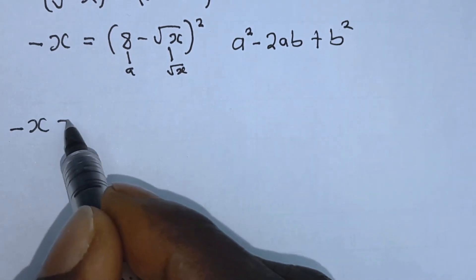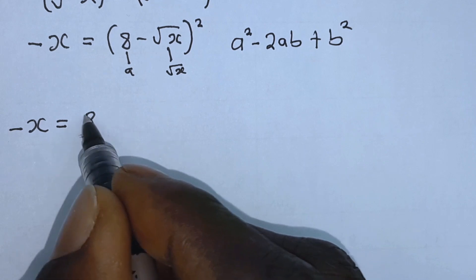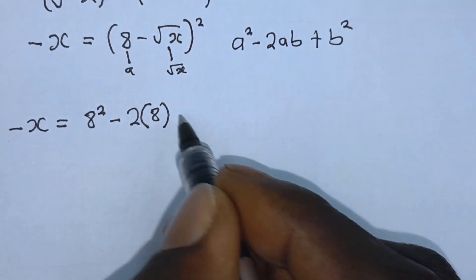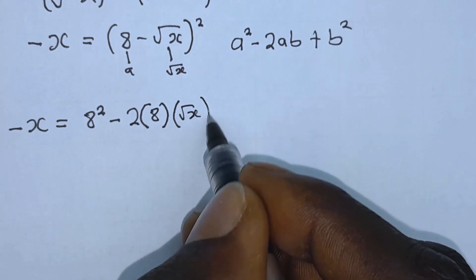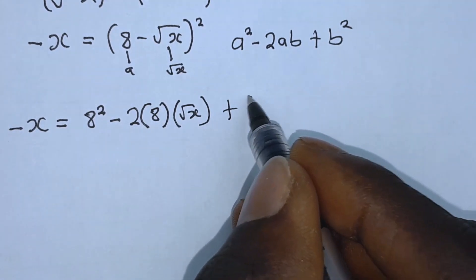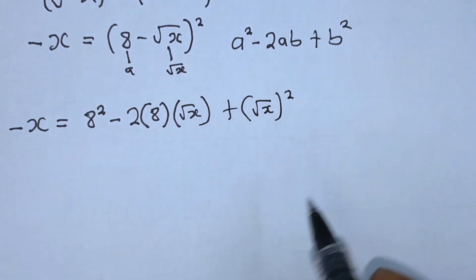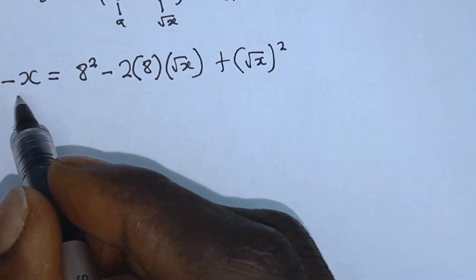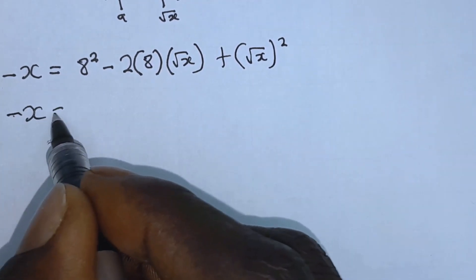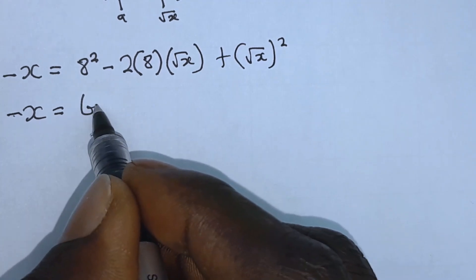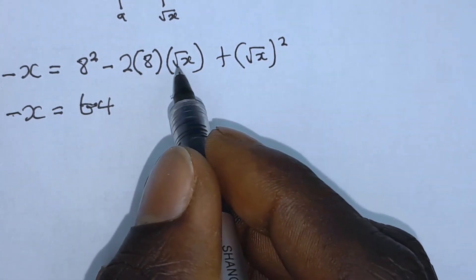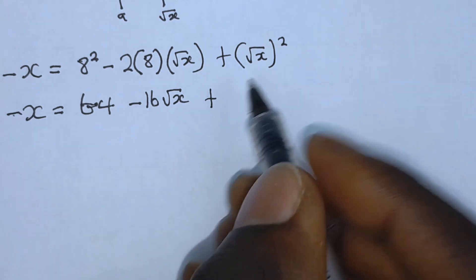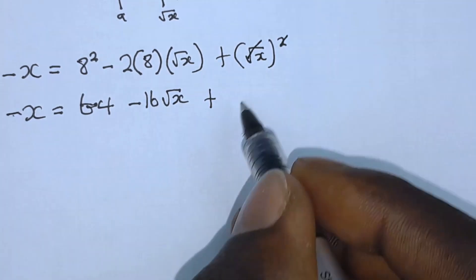We'll have minus x which is equal to a squared is x squared minus 2 times a, where a is 8, times b which is square root of x, plus b squared that is square root of x squared. So minus x is equal to 64 minus 2 times 8 times root of x, which is minus 16 root x, plus x, since the squared cancels the square root.